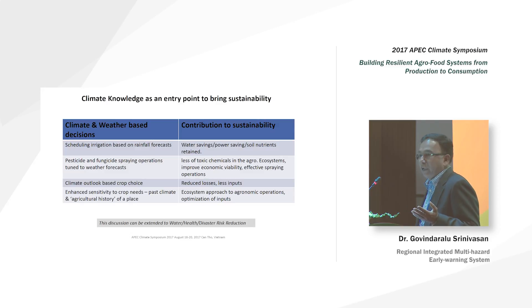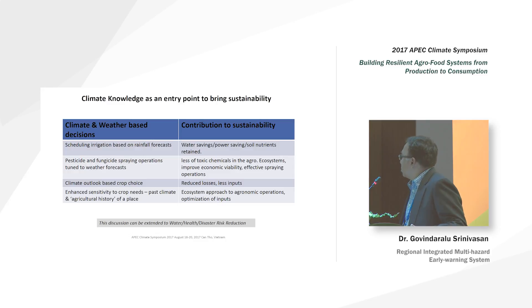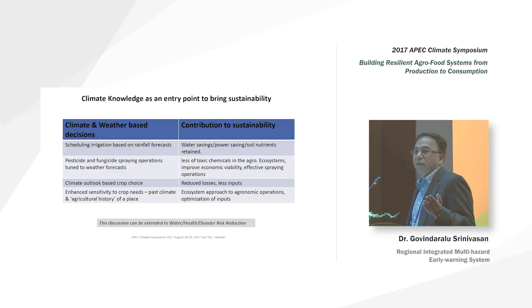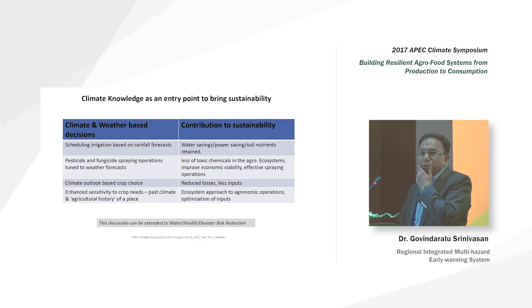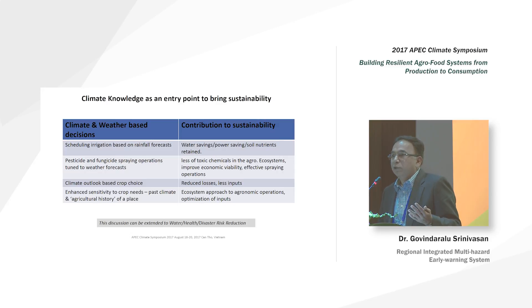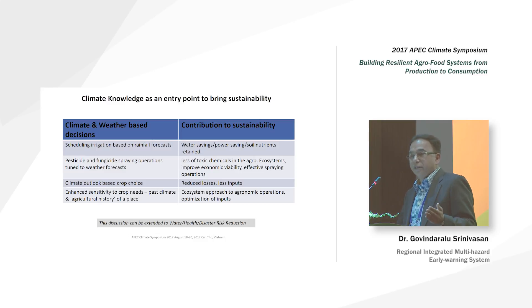There is also enhanced sensitivity of crop needs if you effectively use past climate information to plan agriculture in a particular place. An important aspect is knowing the agriculture history of a location. For example, in southern India where I come from, before the 17th century they were not into paddy cultivation — they grew hard millets and similar crops — but now it's one of the biggest paddy cultivation areas.